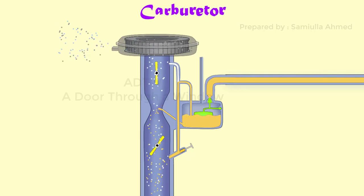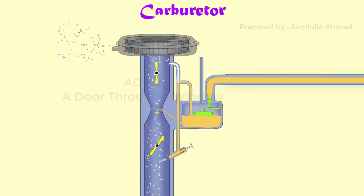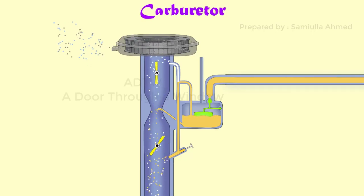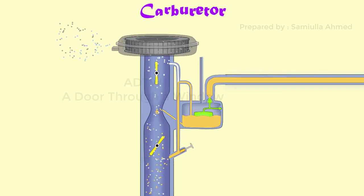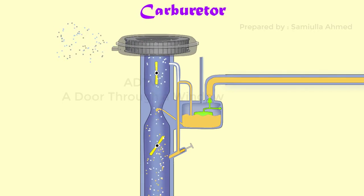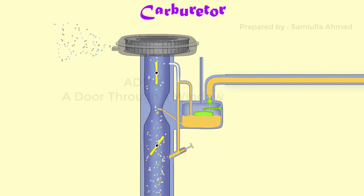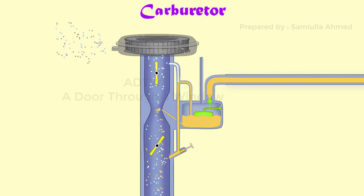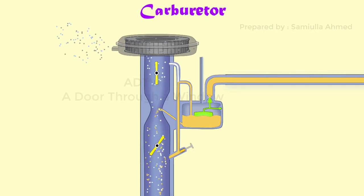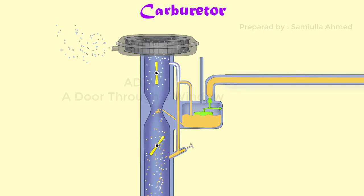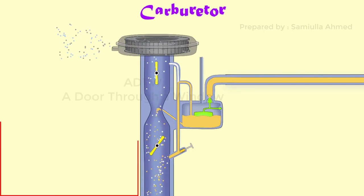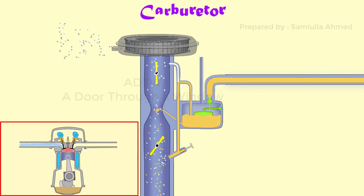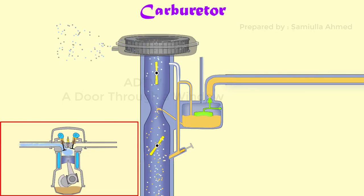If the throttle valve is partially open, less air will flow through the venturi. Thus less air flow will produce less pressure drop, which in turn causes lesser fuel to discharge through the discharge nozzle, and hence less air-fuel mixture is delivered to the engine cylinder. Therefore power output is reduced.